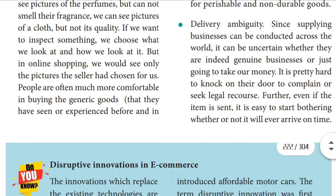Delivery ambiguity is another disadvantage. We keep trust on the merchant and buy the product online, but we have confusion about whether the product will reach us on time, or whether we are dealing with fake people. Since supplying businesses can be conducted across the world, it is uncertain whether they are genuine businesses or just going to take our money. It is very hard to knock on their door to complain or seek legal recourse — we cannot give any complaint or ask for help.